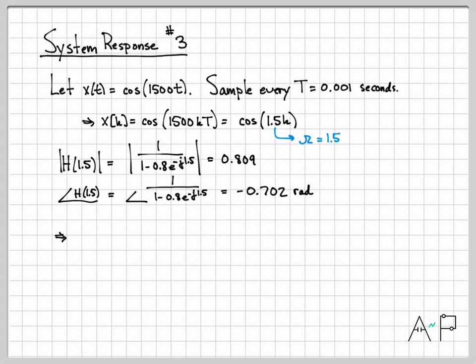In this case, it was a continuous time input that was sampled, and then passed through this discrete time system. And the output is going to be boosted by a factor of 0.809. And its phase will be shifted by an amount minus 0.702.